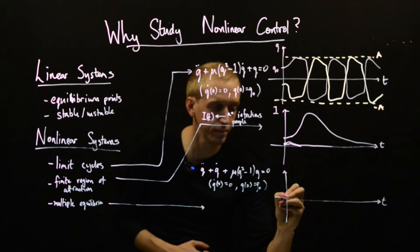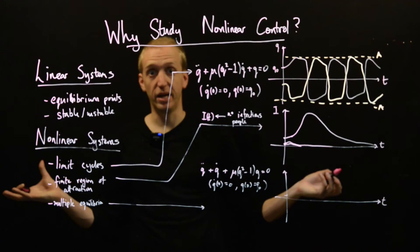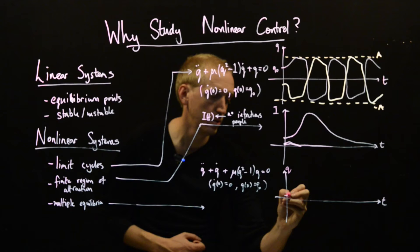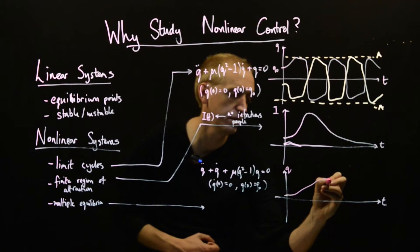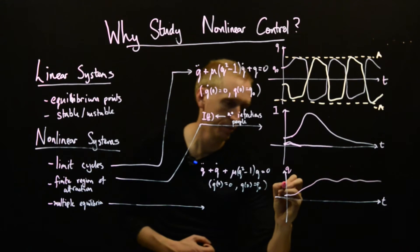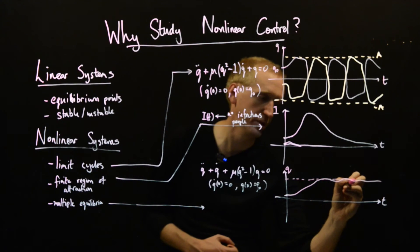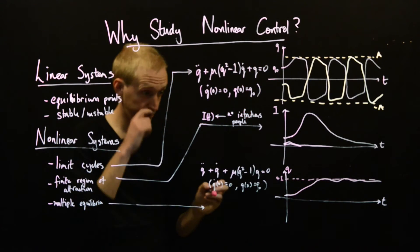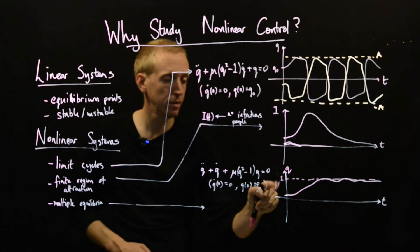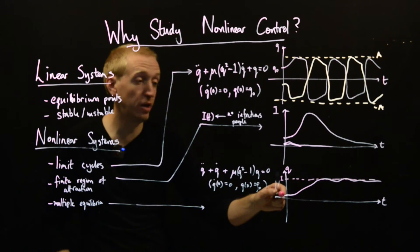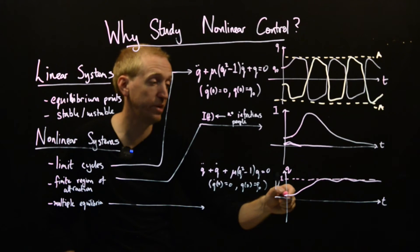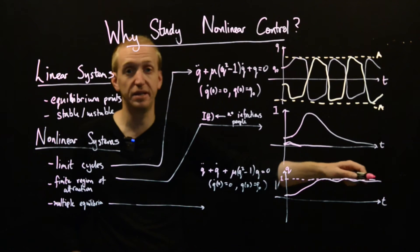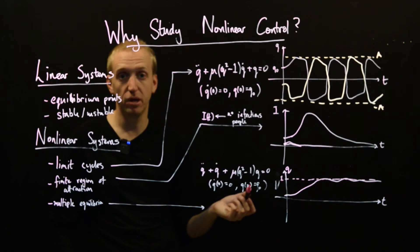So if we start here and we just simulate, so this is our initial condition, we simulate what happens, we get some curve depending exactly on what the parameters are that might do something like that. And the point is that it tends to some value up here. So if we initialize our system here and just simulate, the trajectory will go up here.